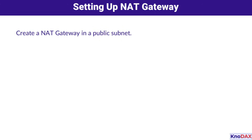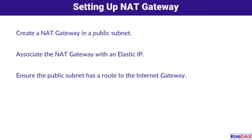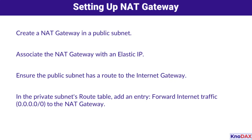Setting up a NAT gateway is straightforward. First, create a NAT gateway in a public subnet and associate it with an Elastic IP. Next, ensure the public subnet has a route to the Internet gateway. Finally, update the route table of your private subnet to forward all Internet traffic — CIDR block with all zeros — to the NAT gateway. Easy, right?